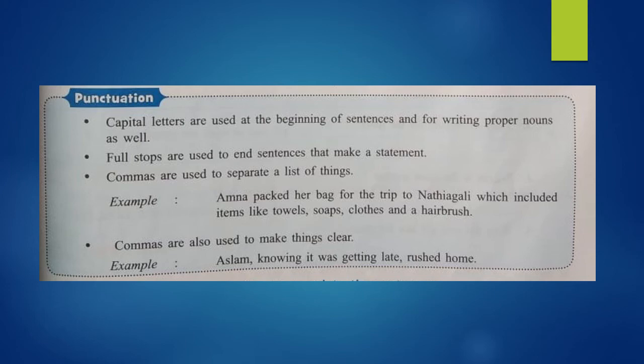Our next topic is punctuation. All of you know these rules of punctuation very well, but we are going to revise them. Number one: Capital letters are used at the beginning of sentences and for writing proper nouns. Number two: Full stops are used to end sentences that make a statement. Number three: Commas are used to separate a list of things — for example, Amna packed her bag for the trip to Nathiagali, which included items like dolls, soaps, clothes, and a hairbrush. Number four: Commas are also used to make things clear — for example, 'Aslam, knowing it was getting late, rushed home.' The main clause is 'Aslam rushed home'; the reason 'knowing it was getting late' is set off by commas.